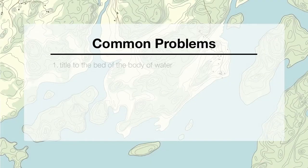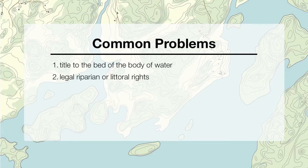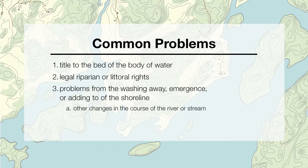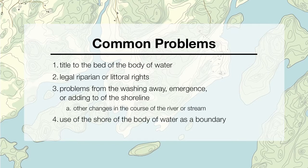Donald Wilson, in Forensic Procedures for Boundary and Title Investigation, states that there are essentially four things to consider when investigating these types of boundaries: title to the bed of the body of water; legal riparian or littoral rights which arise by virtue of the abutting ownership; problems arising from the washing away, emerging, or adding to of the shoreline, or changes in the course of the river or stream; and the use of the shore of the body of water as a boundary.